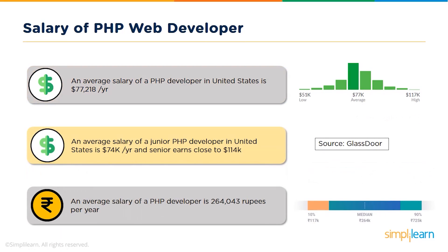Also, Glassdoor has confirmed that junior PHP developers who are less experienced can earn up to $74,000 annually, while a senior PHP developer can earn close to $114,000 annually. Bear in mind that these salaries can be higher or lower depending on the company's size, location, local demand, etc.